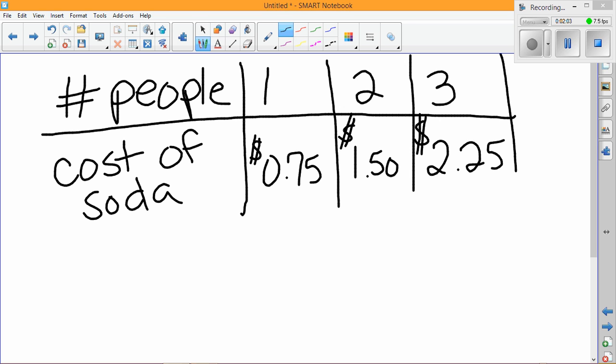So talking about unit rate, unit rate is the cost per item in this situation. Sometimes it's miles per hour. Unit price is the cost per item. A unit rate happens when you divide the two numbers and one of them has to be one. So in the number of people, one person—that's a unit rate. It costs 75 cents for the canned sodas, so a unit rate would be 75 cents.